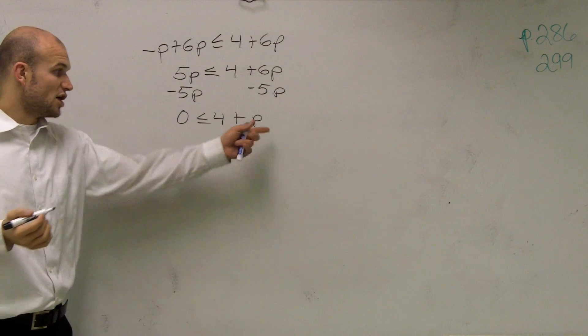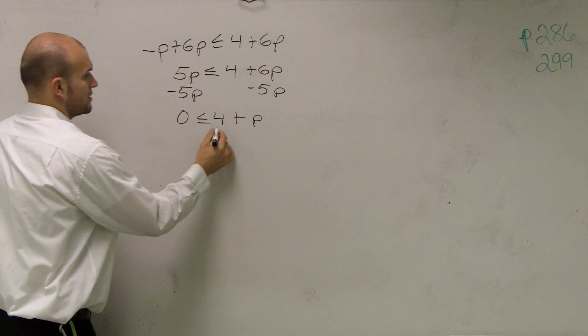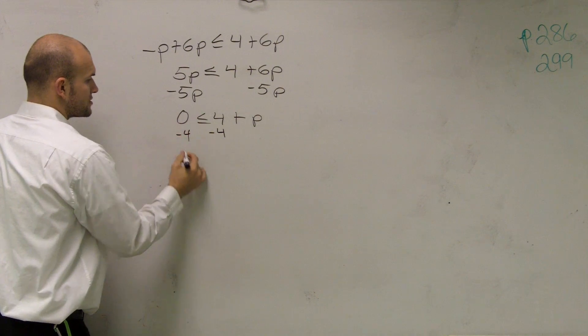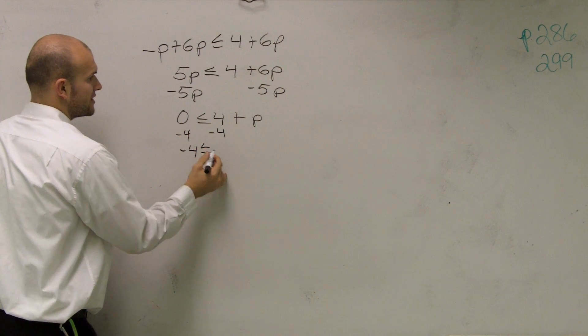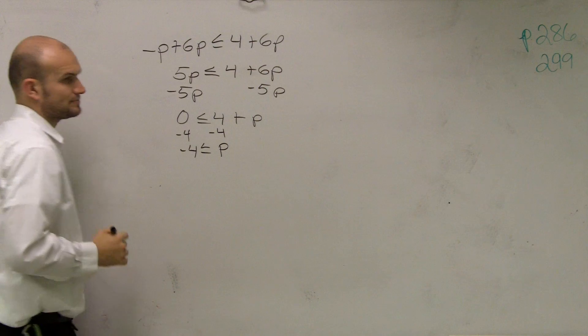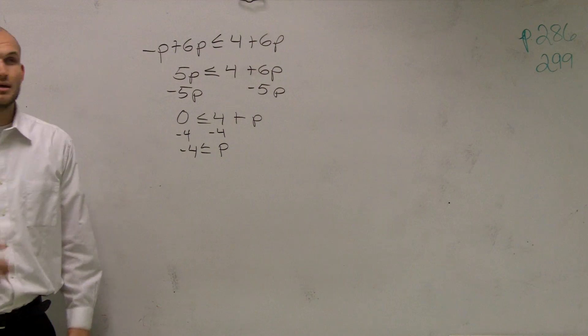Right? Now, to solve for p, I need to get rid of the 4. So you subtract the 4. So therefore, you have negative 4 is less than or equal to p. Right?